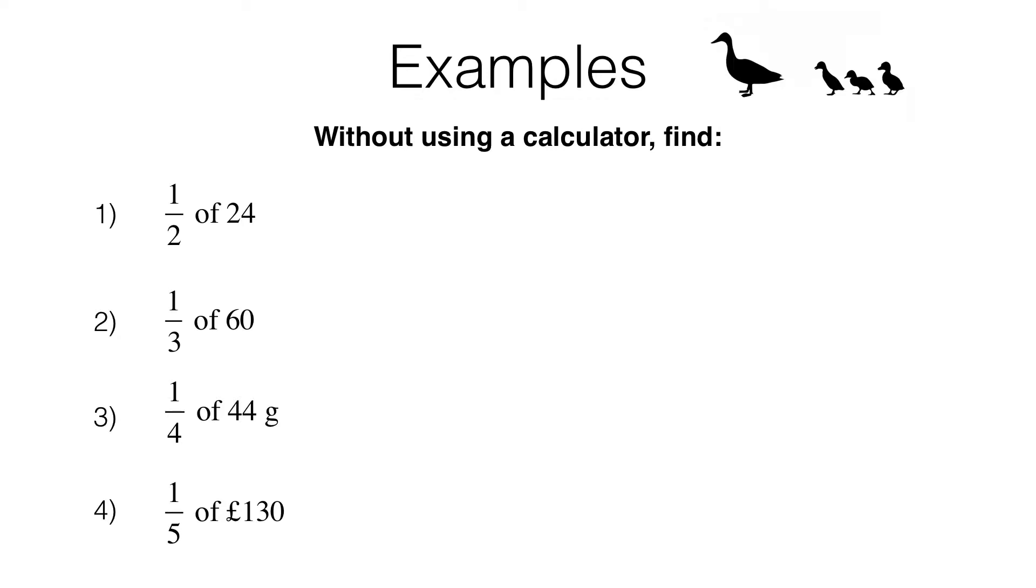In this lesson, we are looking at using fractions and percentages as operators. Let's take a look at the first example. We want to find a half of 24. Now, the easiest way to do that question would be to spot that we want to divide 24 into 2 equal halves. So we want to do 24 divided by 2. So a half of 24 is 24 divided by 2, which is equal to 12.